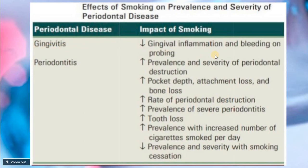In cases of gingivitis, we see a decrease in gingival inflammation and bleeding on probing in smokers. This is not a decrease in the inflammatory infiltrate — it is a decrease in the clinical signs and symptoms. There is peripheral ischemia in smokers, resulting in less bleeding on probing and lower subgingival temperature, so the patient does not present with red gingiva. This masking property of smoking can make a case appear near-healthy when it is not.